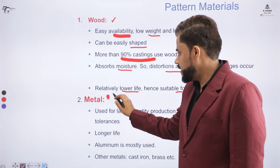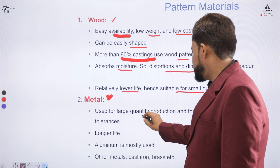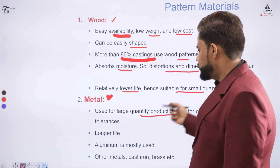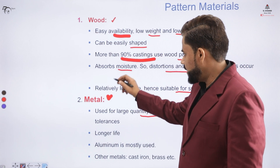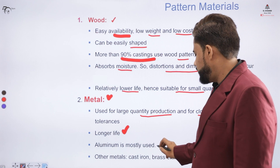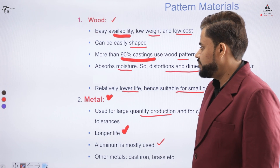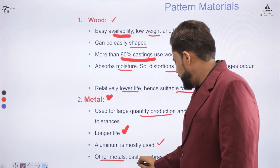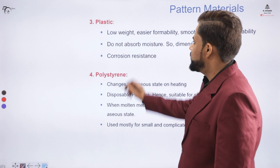The second category of pattern material is metal. For larger types of castings and situations requiring closer dimensional tolerances, metal patterns are preferred. Compared to wood, metal patterns have a longer life. We majorly use aluminium for patterns, though cast iron or brass can also be used. The third category is plastic.